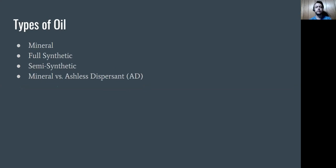The different types of oils found in aviation are: mineral oil, which is basically straight oil from the earth put through a refinery process, usually measured in only one weight or viscosity; full synthetic oils, which are manmade and more used in turbine engines rather than piston engines; and semi-synthetic, which is a mix between mineral and manmade oil. There is also the distinction between straight mineral oil and ashless dispersant oil.